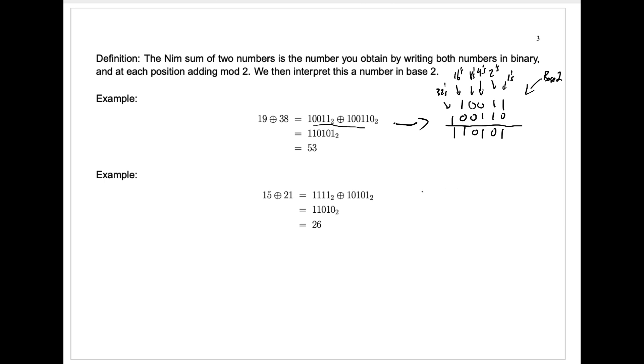What is 15 plus 21 using the Nim sum? 15 is just 1, 1, 1, 1. That's 8 plus 4 plus 2 plus 1. 21 uses a 16, no 8's. We need 5 more, so we have a 4, no 2's, and a 1. And remember, all of this is base 2 here. Then we add mod 2. So it's like adding without any carryover. 1 plus 1 is 2. That's a 0 mod 2. 1 plus 0 is 1. 1 plus 1 gives you 0. 1 plus 0 gives you 1, and the 1 gives you a 1.